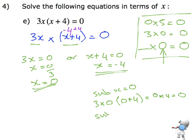And equally, if I was to substitute x equals negative 4 into the equation, I'll get 3 times negative 4 times negative 4 plus 4. So that's going to give you negative 12 times 0, which is 0. So we can always check our answers if we need to.